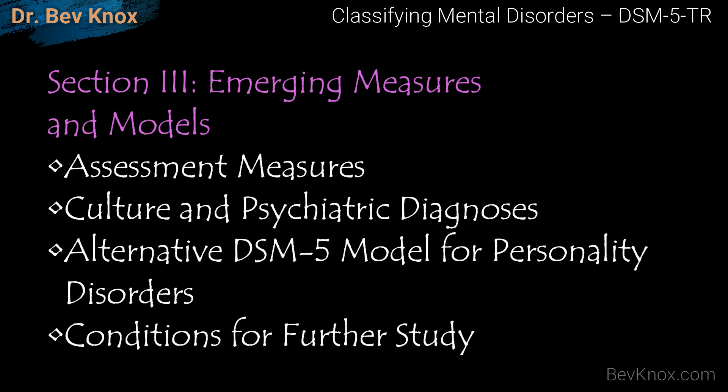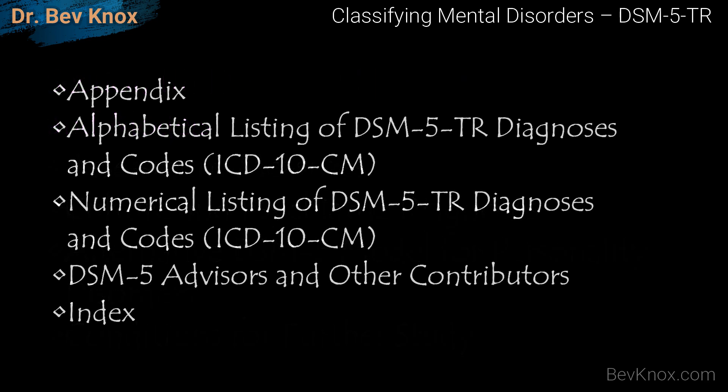In Section 3, it covers emerging measures and models, including assessment measures, culture and psychiatric diagnoses, the alternative DSM-5 model for personality disorders, and conditions for further study. There is also an appendix with an alphabetical listing and a numerical listing of the DSM-5-TR diagnoses and codes, DSM-5 advisors and other contributors, and an index.